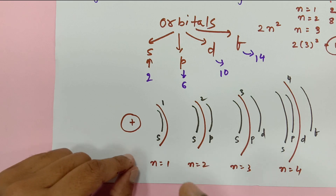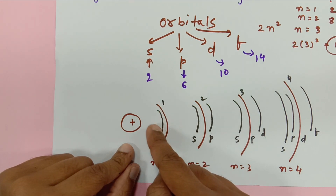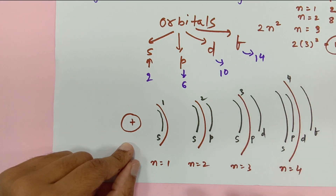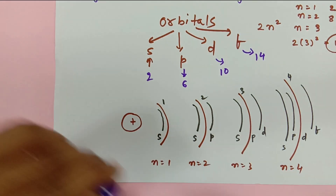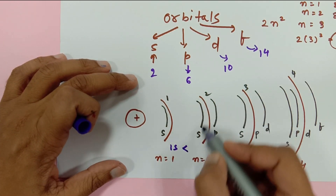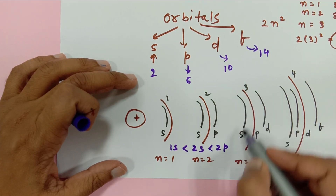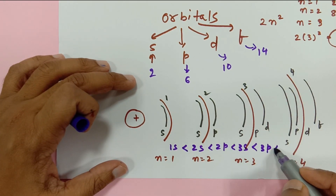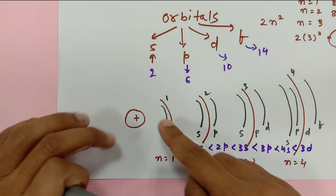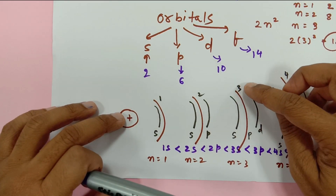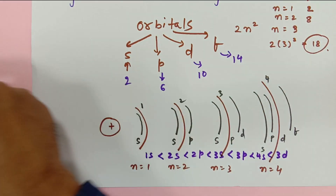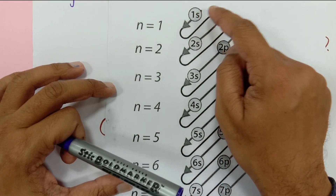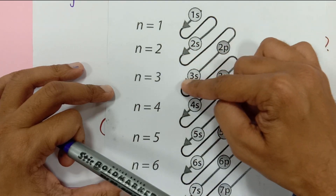When filling electrons — for example, 19 electrons for potassium — electrons first go to the lowest energy orbit. Once filled, they move to the next. However, there is an important exception: instead of 3d coming after 3p, 4s has lower energy than 3d. So electrons fill 4s before 3d. The filling order is: 1s, 2s, 2p, 3s, 3p, 4s, then 3d. This is experimentally verified.